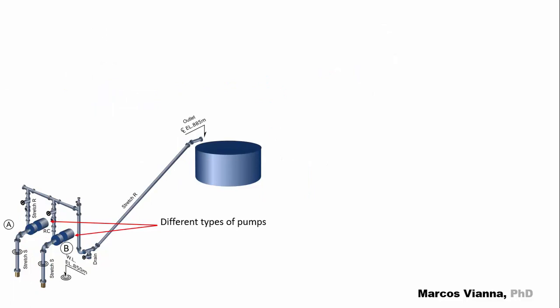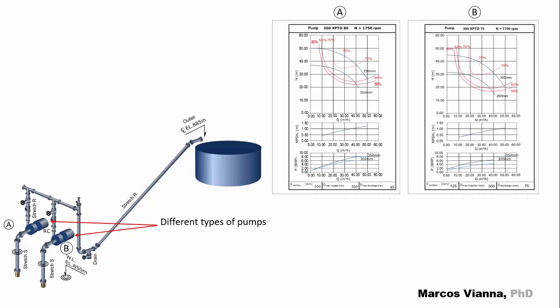And what's going to happen when we associate two different types of pumps? Here are their charts. The pump on the left, which we call A, is bigger than the pump on the right, which we call B.